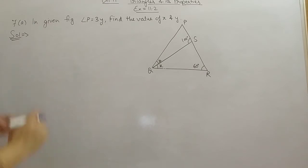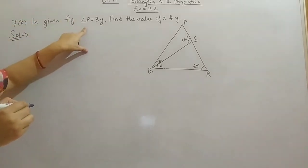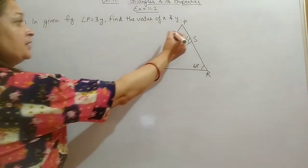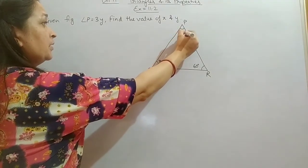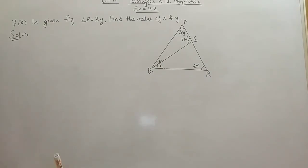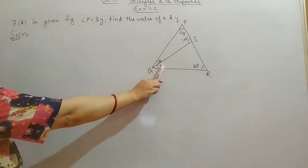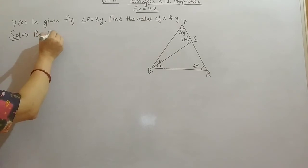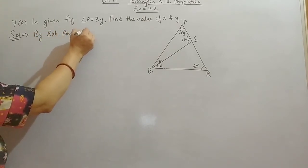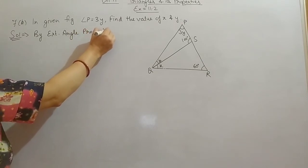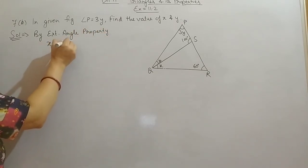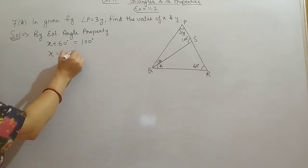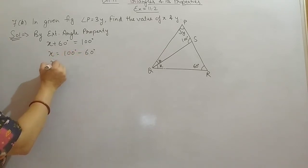Next is question 7, part B. In the given figure, angle P is equal to 3Y. We have to find the values of X and Y. To find X and Y, we use the exterior angle property. By exterior angle property, X plus 60 equals the exterior angle of 100 degrees. So X equals 100 minus 60, which is 40 degrees.